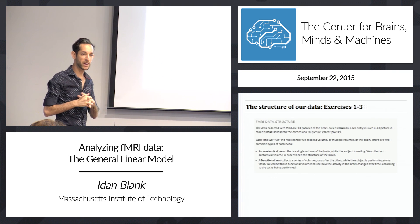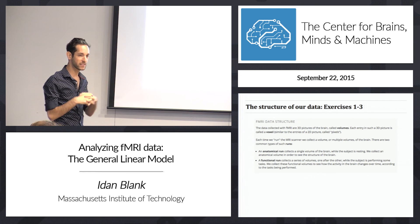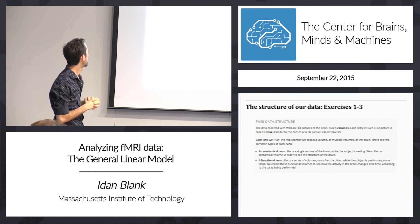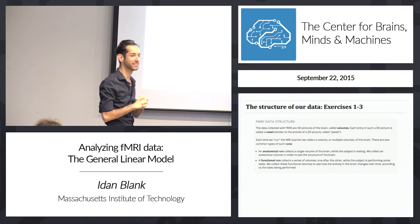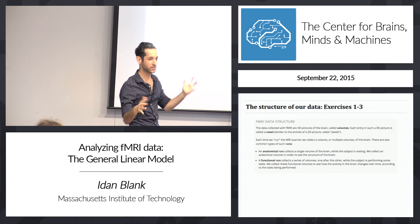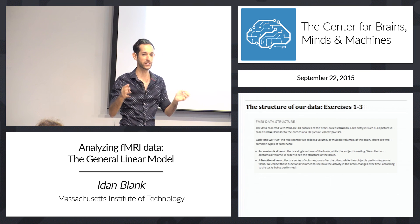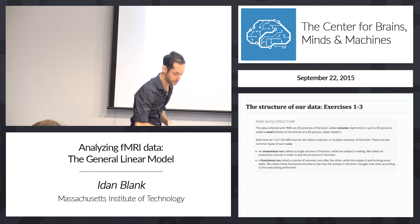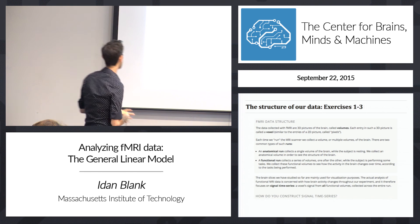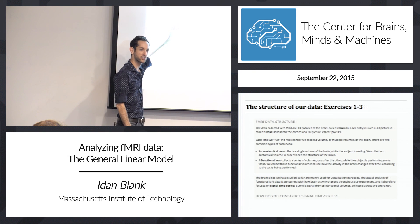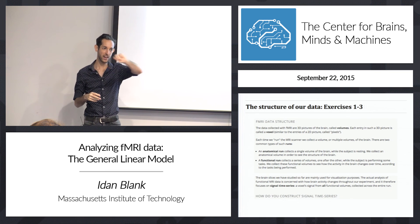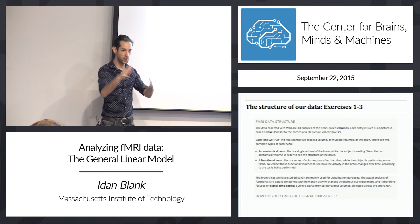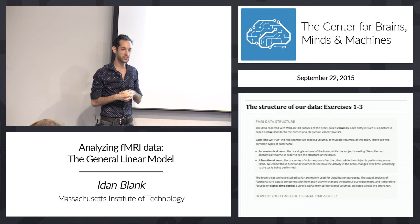Now I'd like you to do exercises one through three to explore brain data a little and get a sense of what it looks like. This website has most of what I say written there in case you forget or want to read it again, but you can go straight to the exercises. First you'll look at anatomical and functional images, then you'll extract the signal time series from different voxels. I'll go around and help — you can also help each other — and once most of you are done, we'll continue.